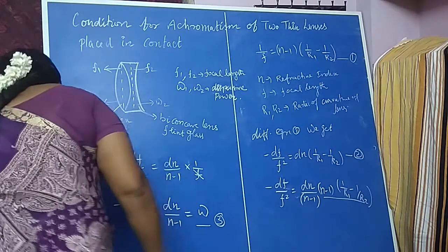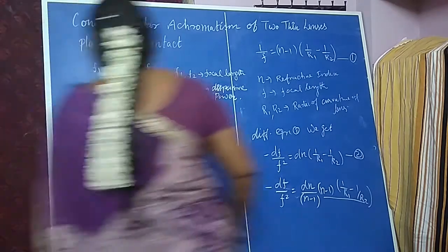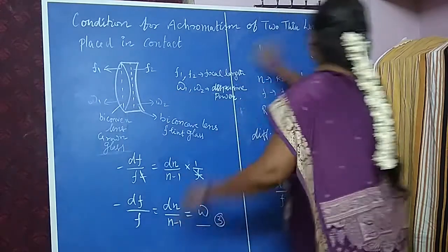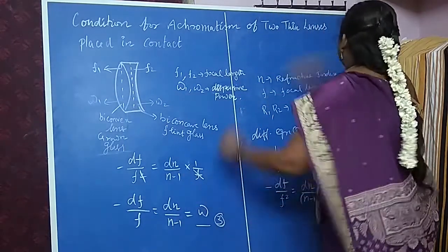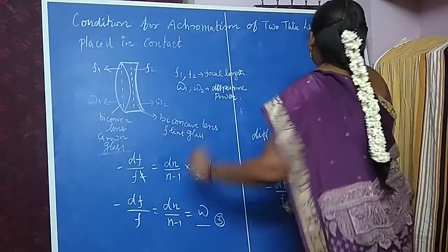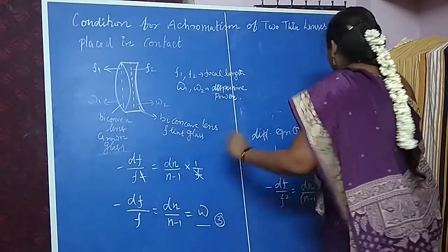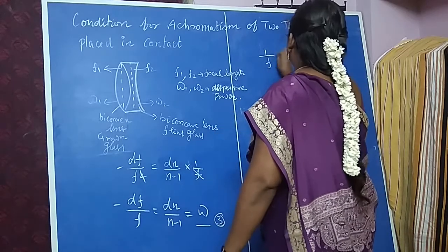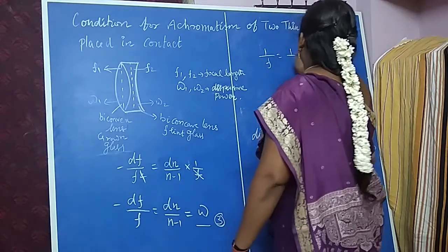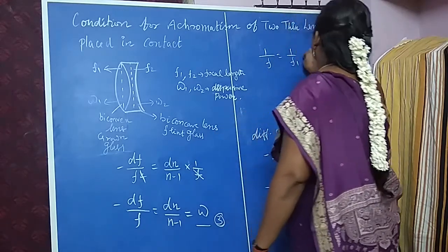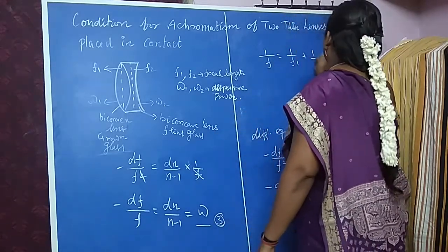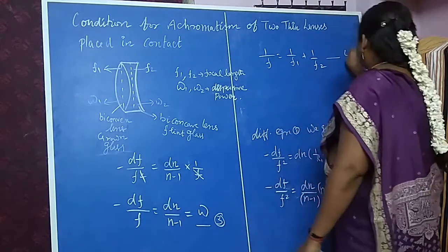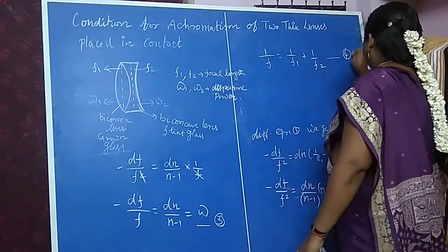Now, for the achromatic combination of two lenses in contact, the combined focal length is given by: 1/F = 1/F1 + 1/F2. Take this as equation number 4.